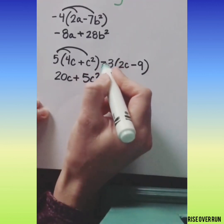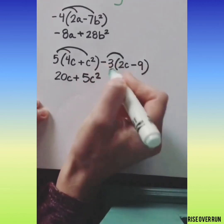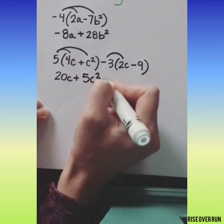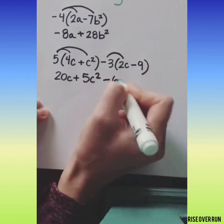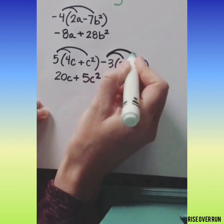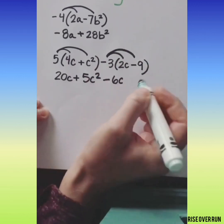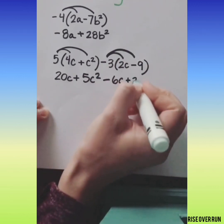Now over here we're distributing a negative 3. Negative 3 times 2c is negative 6c. Negative 3 times a negative 9 is a positive 27.